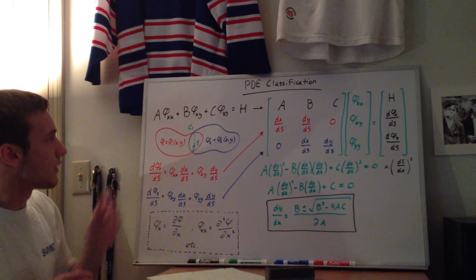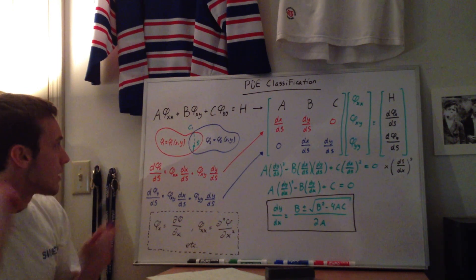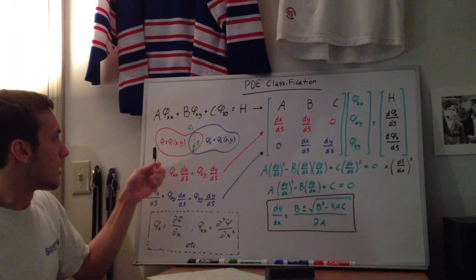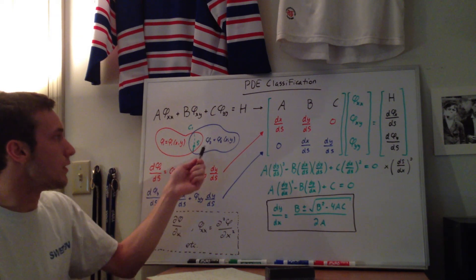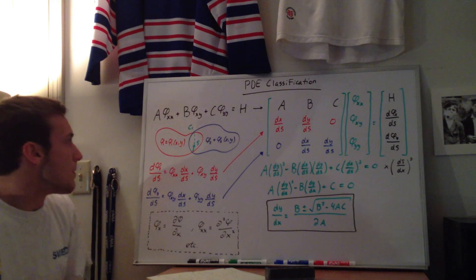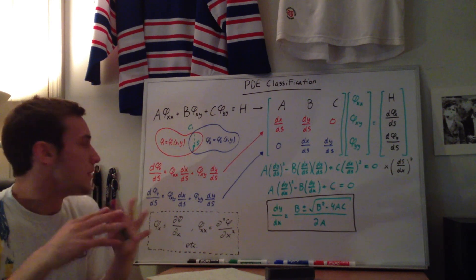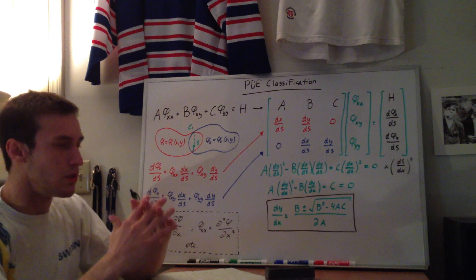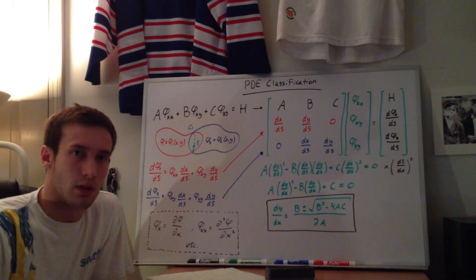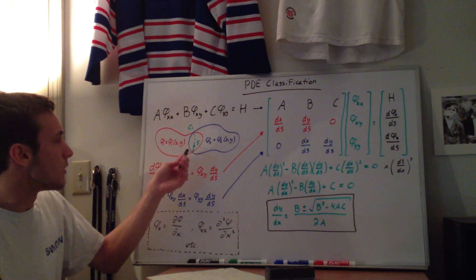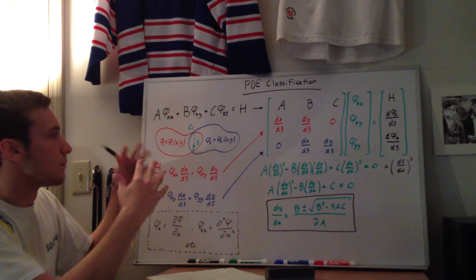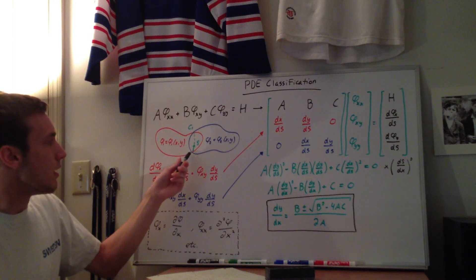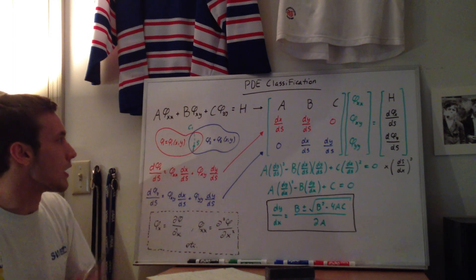So we have this second order PDE, and now we can assume that we have two solutions — phi one, which is a function of x and y, and then another solution phi two. You can imagine that these solutions are surfaces, and if you have two surfaces in space, at some point they'll intersect each other, and where they intersect each other you get a line. We call this the characteristic curve, which I've labeled here as C1. The direction along the characteristic line is S.